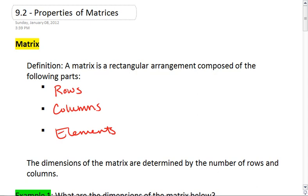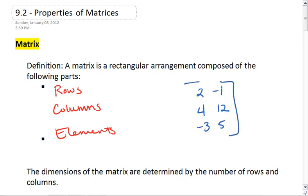For example, I could have a matrix. Let's see, 4, 12, negative 3, 5. Here's my matrix. We always do use brackets around the matrix.